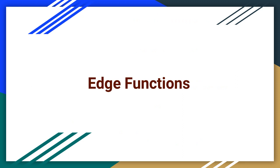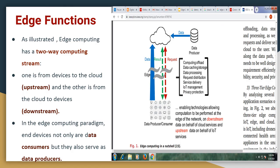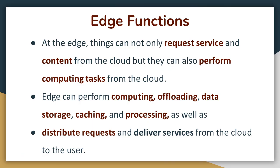Now let us consider the functionalities provided by the edge computing model. Edge computing has two-way computing streams: one is from devices to the cloud, which is called upstream, and the other is from the cloud to devices, called downstream. In the edge computing paradigm, end devices not only are data consumers but they also serve as data producers. At the edge, things can not only request service and content from the cloud but they can also perform computing tasks from the cloud. Edge can perform computing, uploading data, data storage, caching and processing, as well as distribute requests and deliver services from the cloud to the user.